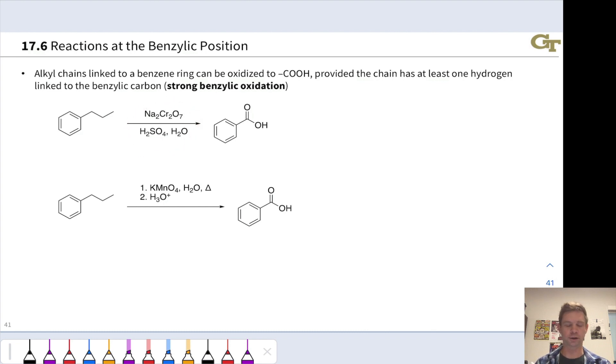Water is one way to do this, and using potassium permanganate and heat followed by acid is another way to do this. And this is an oxidation process.